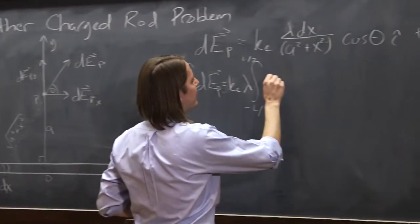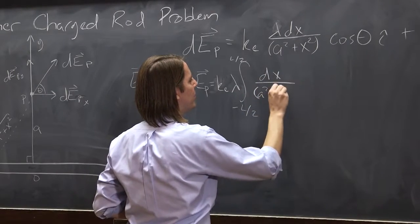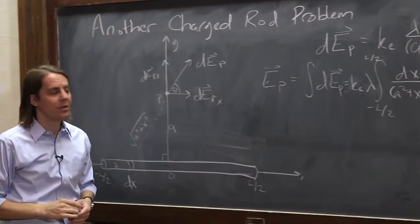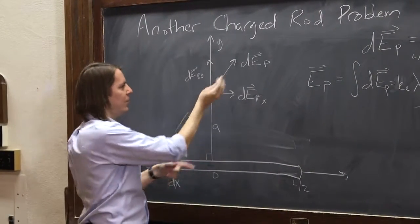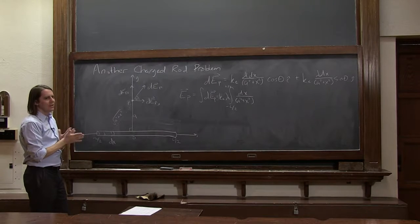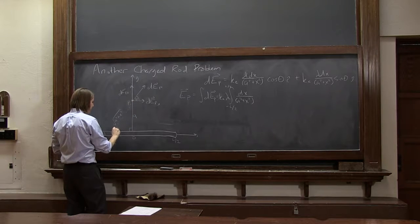So then we're left with dx over a squared plus x squared. And then cosine theta does depend on where you are. It does depend on x. Because we can think about this angle theta. As we move this around, this angle is going to change, clearly. So we need to get an expression for cosine theta in terms of x. So what we have to realize is that this theta is the same as this theta.